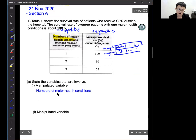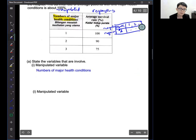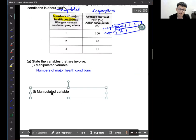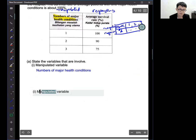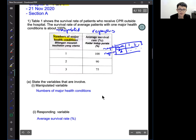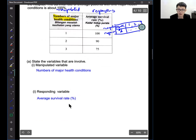The manipulated is the number of major health condition. This is responding, this one I typed wrongly. Responding variable will be the average rate of survival. By percentage, you'll just copy this and then you will get your answer correct. Average survival rate. Probably here you will get one mark, here another one, you will get one more mark.